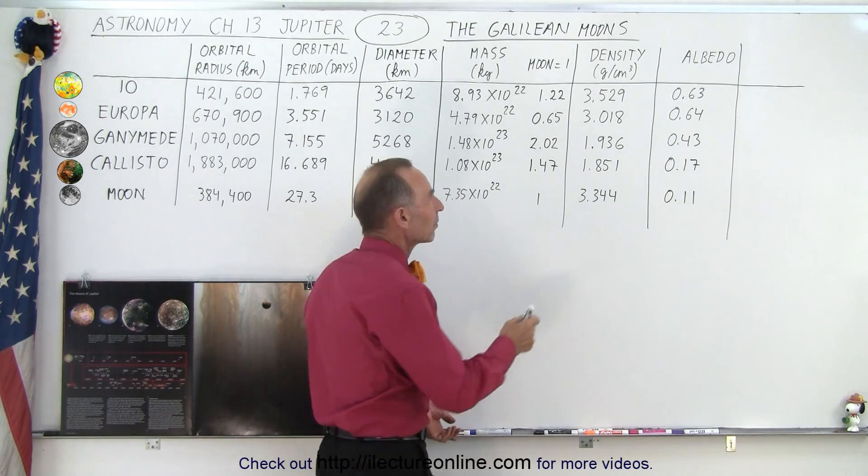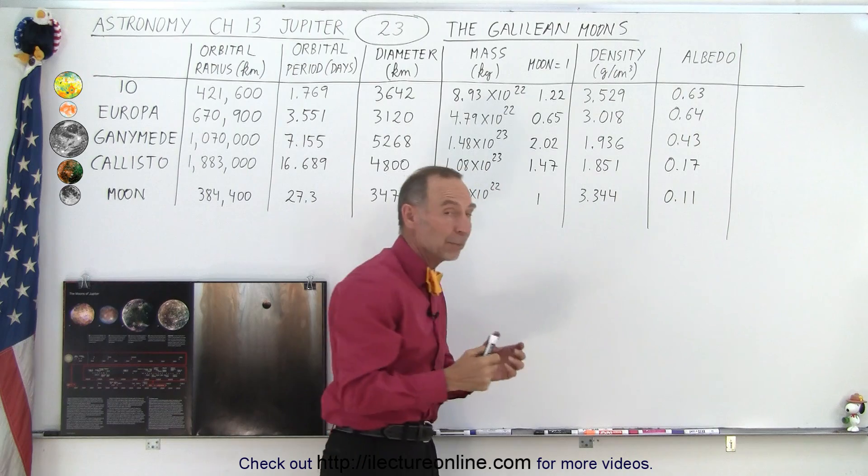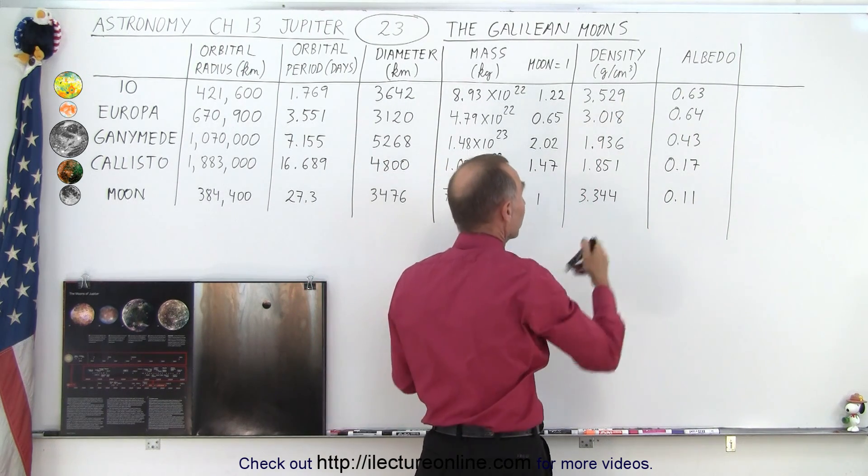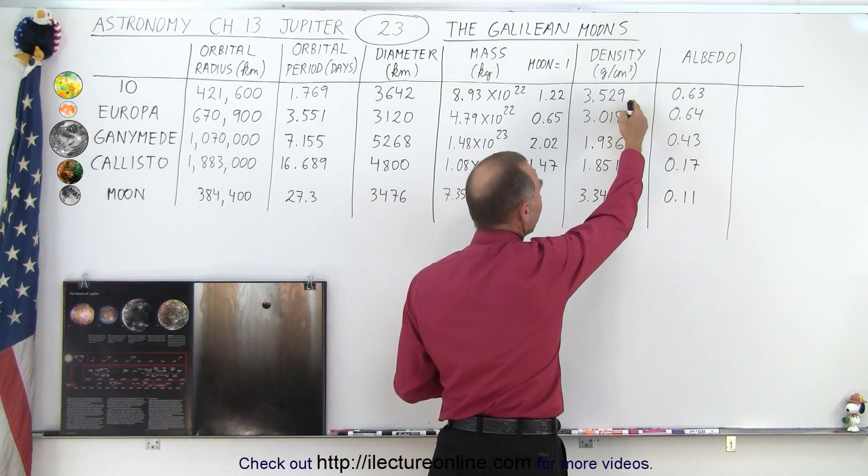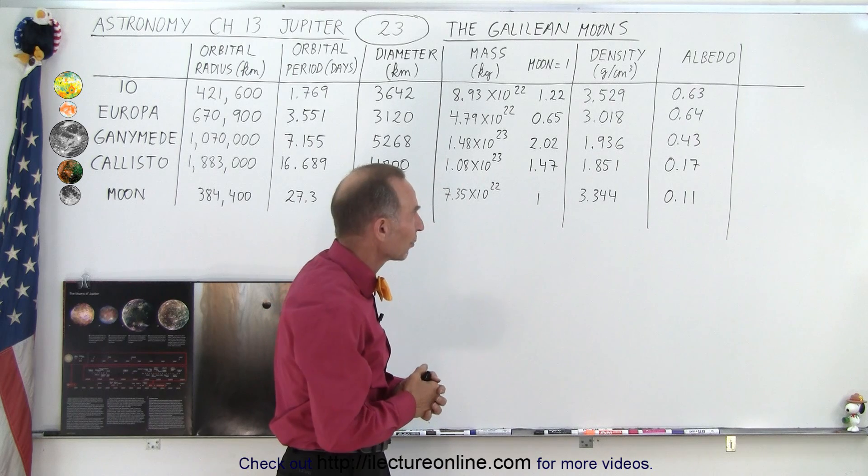The indication then would be that these two moons probably contain a lot more ice water, and these two moons here probably, comparatively, contain more rock and other minerals that make it heavier than what you expected if it was made purely out of rock.